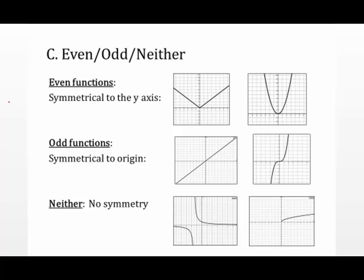Now let's talk about even and odd functions, or neither. A function is even if, when you look at its graph, it's symmetrical to the y-axis — meaning if you fold along the y-axis, the lines fall right on top of one another. For instance, this absolute value graph is symmetrical, and this parabola is also symmetrical when folded along the y-axis. If a parabola is shifted off-center, folding along the y-axis leaves nothing to match, so it would not be even — you'd say neither.